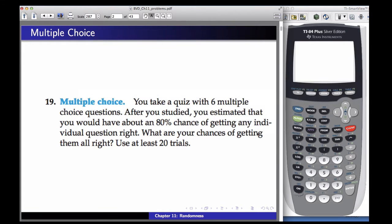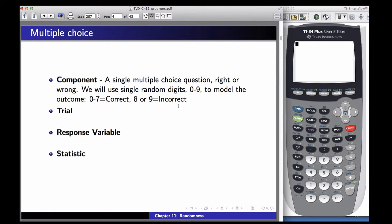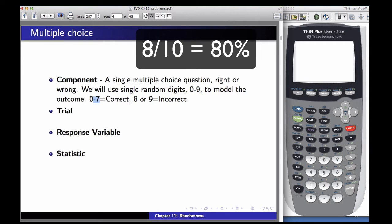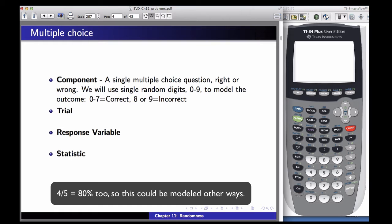Well, to model this, I'm going to suggest that our components should be a single multiple-choice question, right or wrong. We could use single random digits, 0 to 9, to model the outcome. There are 10 of these here, and remember, we have an 80% chance of getting it right. So I'm going to take eight of those numbers and count that as correct, and the other two will mean incorrect.